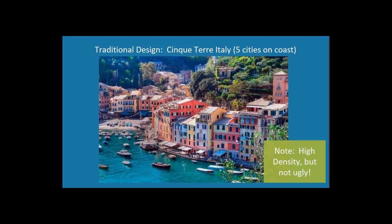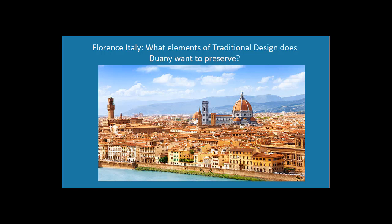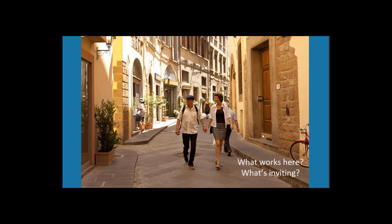Traditional design is an alternative. Some places in Europe are dense, but you wouldn't say they're ugly. Here's a village in Cinque Terre — five little cities along the coast. There's some density but it's very pretty. Or Florence — it's dense, with buildings packed in, but it's still very attractive to tourists. What kind of elements are here that Duany wants to preserve? Some of these streets are very walkable — they're narrow, you feel safe, you can use them for bikes, there are different shops, and it's all on a human scale.